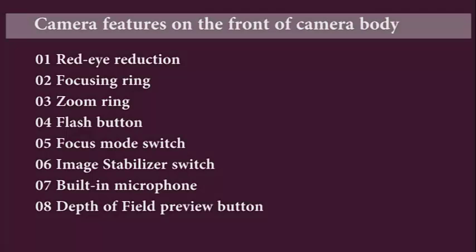Camera features on the front of the camera body. These include: 1. Red eye reduction, 2. Focusing ring, 3. Zoom ring, 4. Flash button, 5. Focus mode switch, 6. Image stabilizer switch, 7. Built-in microphone, and 8. Depth of field preview button.